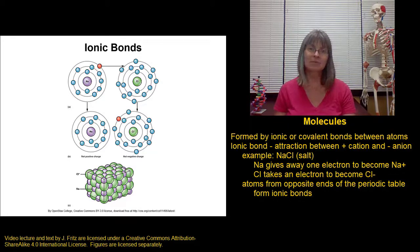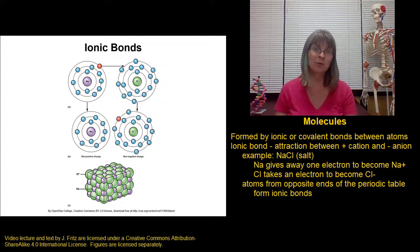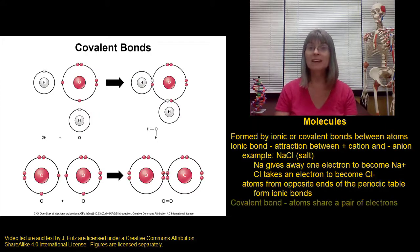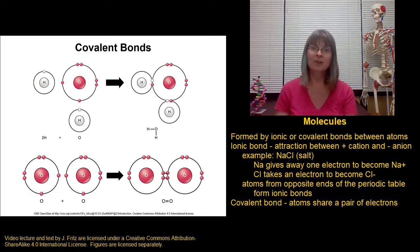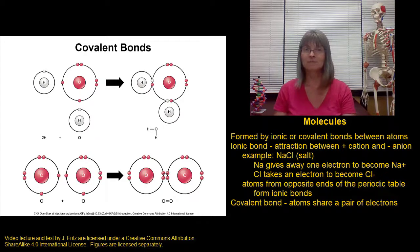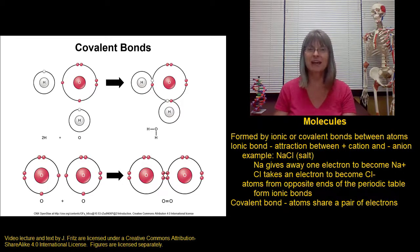One thing about ionic bonds is they're not particularly strong in water — ionic bonds tend to fall apart once water is involved, and we'll look at that more a little bit later. A stronger type of bond is a covalent bond. In a covalent bond, you don't have one atom giving away an electron and another taking it. Instead, the two atoms are sharing a pair of electrons, and when they share the electrons, both atoms get to claim that electron as part of their electron shell.